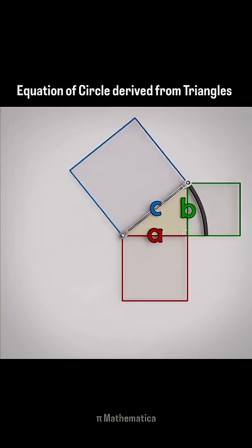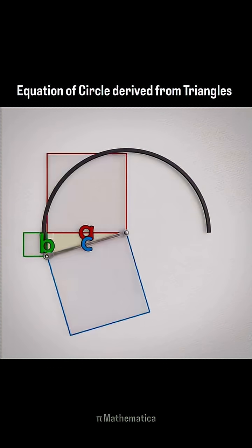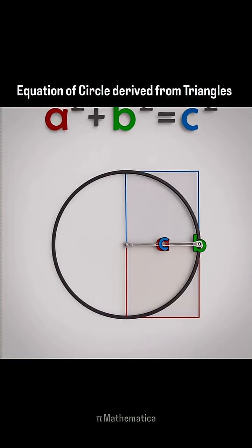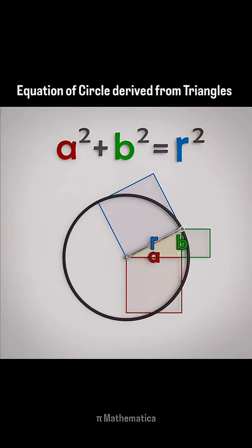If you trace out the unpinned end of the fixed hypotenuse, you'll see that it draws out a circle like a compass. The hypotenuse is now the radius of the circle.